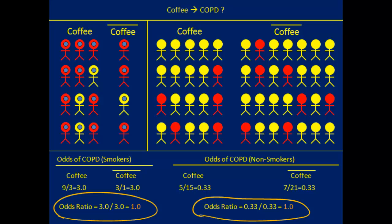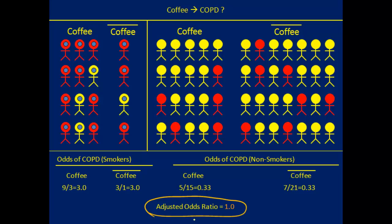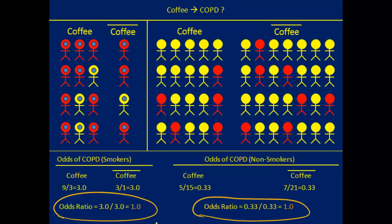Let's take a closer look. We have seen this picture many times before. This is when we were controlling for smoking when we were looking at the effect of coffee drinking on COPD. In this example, we always found the same odds ratio inside the smokers and the non-smokers. We said that when the odds ratio was the same or similar, we could combine that into an adjusted odds ratio — the effect of coffee on COPD adjusted for smoking.